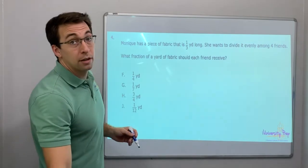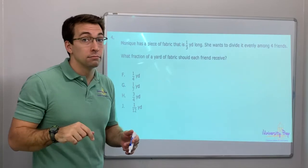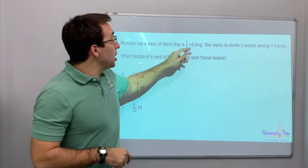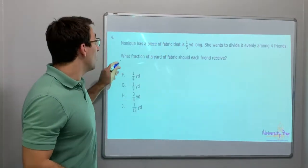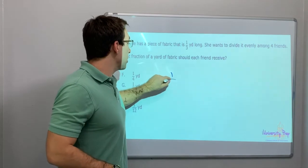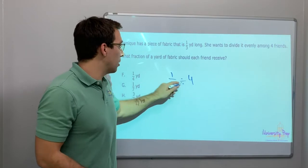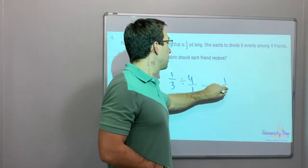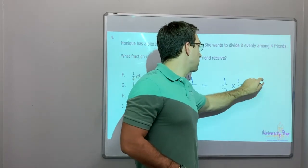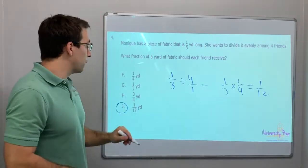All right. Monique had a piece of fabric that is one-third yard long. Okay? One-third of a yard is one foot, because a yard is three feet. She wants to divide it evenly among four friends. What fraction of a yard of fabric should each friend receive? One-third divided by four, right? Divided by four. Over one equals one-third times one-fourth equals one over twelve. Each friend should receive one-twelfth of a yard.